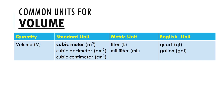We begin with volume. Volume has the following units. In the standard unit, it is in cubic meters. In the metric unit, the liter or milliliter — liter is L, milliliter is mL. For the English unit, it's common to hear quart or quarts, gallon or gallons. One milliliter is equivalent to 1 cubic centimeter, and 1 liter is equivalent to 1 cubic decimeter.